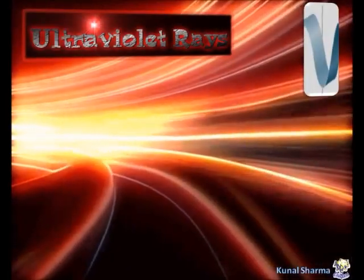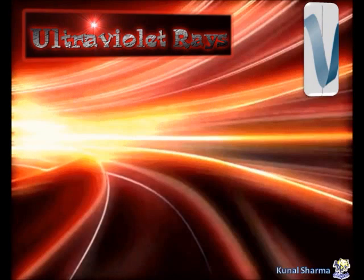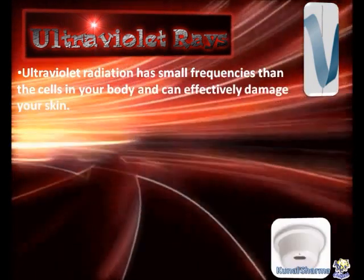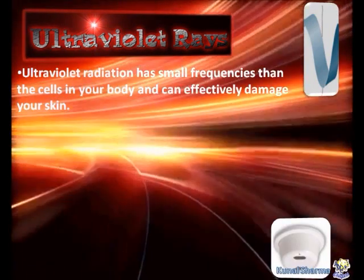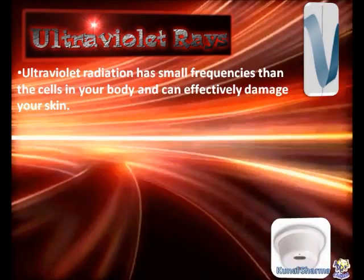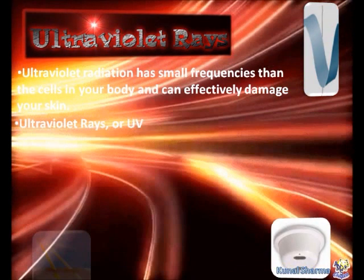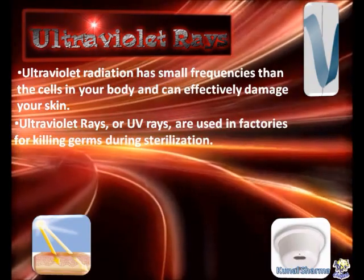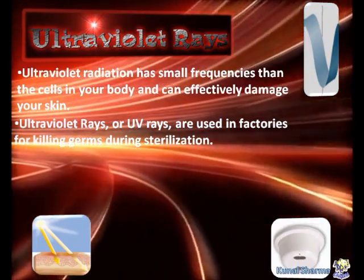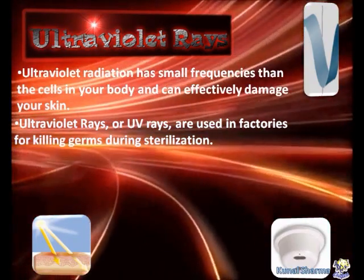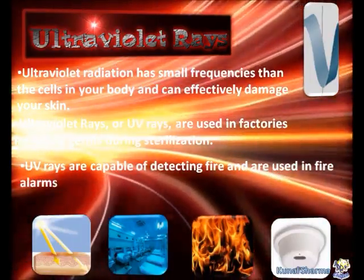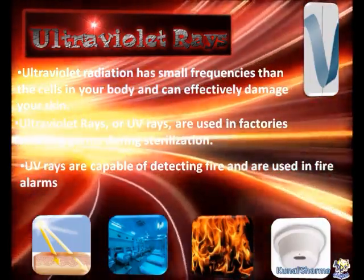Ultraviolet rays. Ultraviolet radiation has smaller wavelengths than the cells in your body and can effectively damage your skin. UV rays are used in factories for killing germs during sterilization. UV rays are also capable of detecting fire and are used in everyday fire alarms.